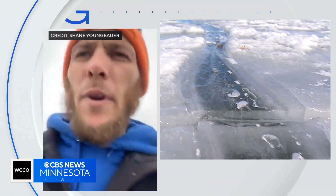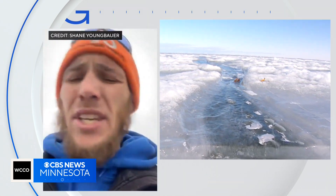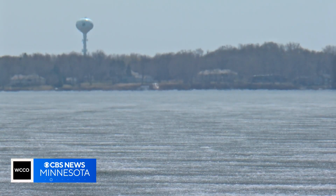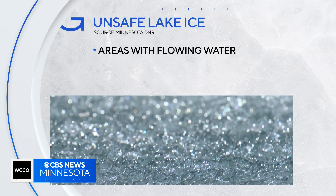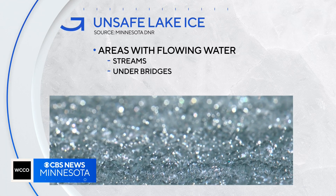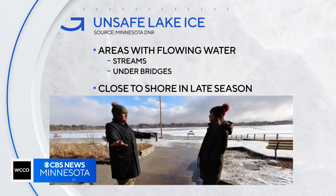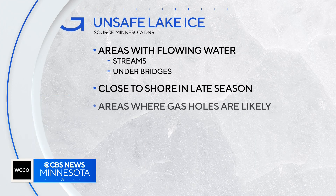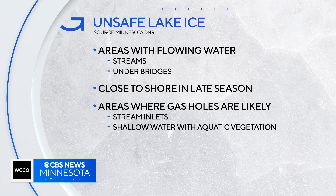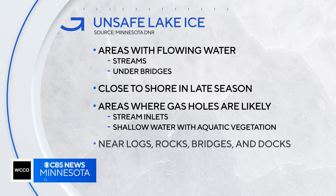We had a pretty big crack open up east to west. Lake ice is weakest in areas of flowing water, like streams and under bridges, and close to shore. Ice thickness can vary even in just a few feet. Gas holes caused by stream inlets and aquatic vegetation can also weaken ice, and areas near logs, rocks, bridges, and docks can be dicey too.